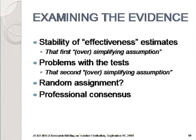Professor Jesse Rothstein will be presenting some additional evidence and elaborating on some of these concerns. My first oversimplifying assumption pertained to the notion that effectiveness was a stable teacher characteristic — that's addressed by evidence concerning the stability of effectiveness estimates. My second simplifying assumption had to do with the power of brief, inexpensive tests to locate students along a one-dimensional achievement scale. Since these tests are fundamental drivers of any value-added model, it's really important to look at them very closely.